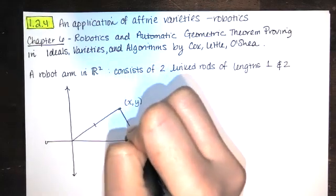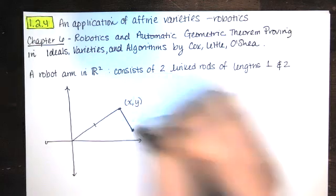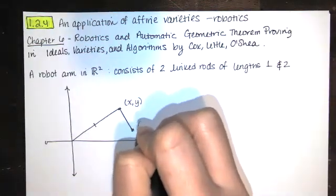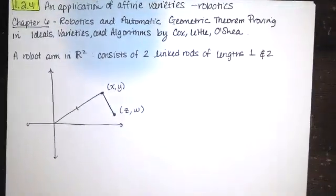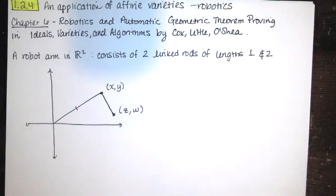The point where it can pivot from, we're going to call the point (X,Y), and then there's another part of the arm that's only one unit long, and we'll call the location of that point (Z,W). I'm just using those variables because those are the variables provided in our book.